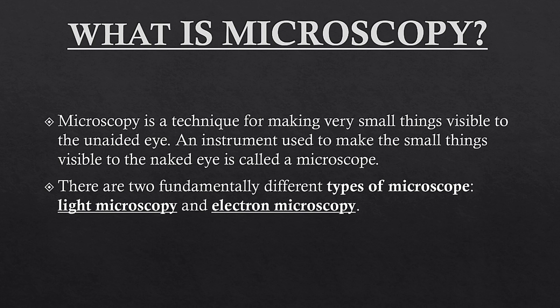Microscopy can be defined as a technique for making very small things visible to the unaided eyes. The instrument used to make a small thing visible to the naked eyes is called a microscope. Microscopy is the technique by which we can see small things with the naked eyes.